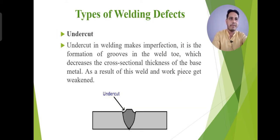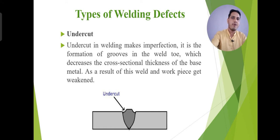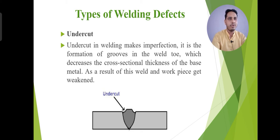Another defect is undercut. This is the basic diagram of undercut — this is the metal that you are going to weld, and these cuts show the undercut defects. Undercut in welding makes imperfections because it is due to the mistake of the operator, and you should use a skilled operator and skilled welder. It is the formation of grooves in the weld toe which decreases the cross-sectional thickness of the base metal. As a result, the weld and the work piece get weak. Definitely, if there is an undercut in the welding bead, stress concentration will be increased at that point, leading to a decrease in the strength of the metal.